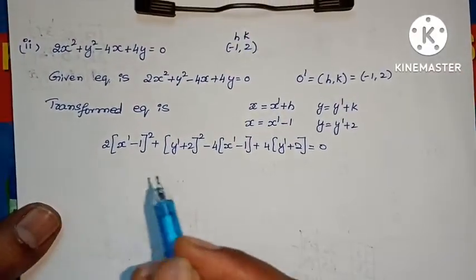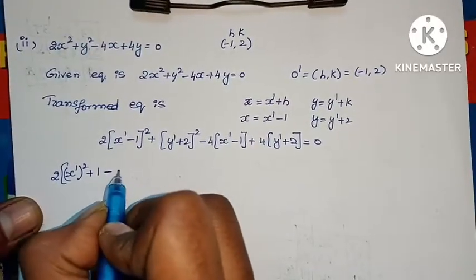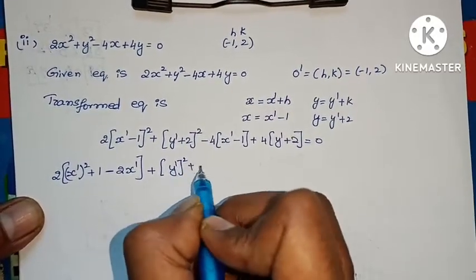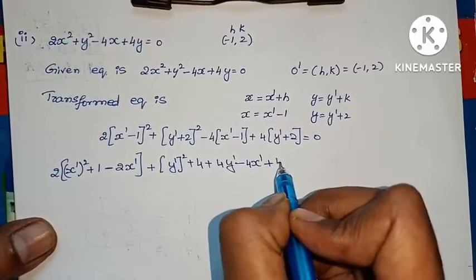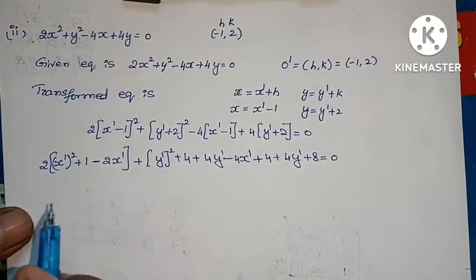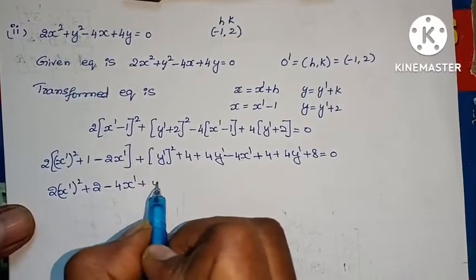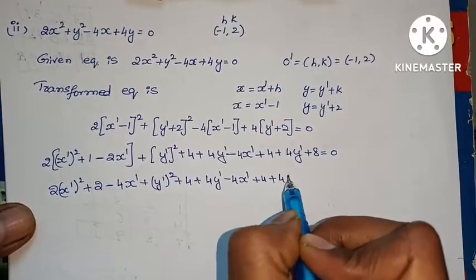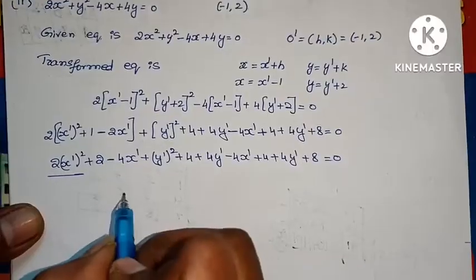Now apply (a minus b) whole square and (a plus b) whole square: 2 into (x dash square plus 1 minus 2 x dash) plus (y dash square plus 4 plus 4 y dash) minus 4 x dash plus 4 plus 4 y dash plus 8 equals to 0. Collecting constant terms: 2 plus 4 plus 4 plus 8 equals 18.